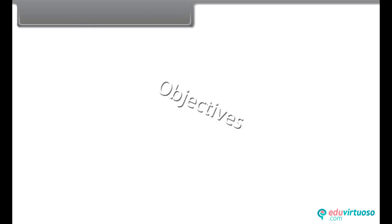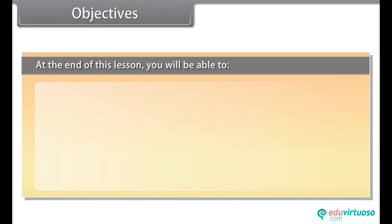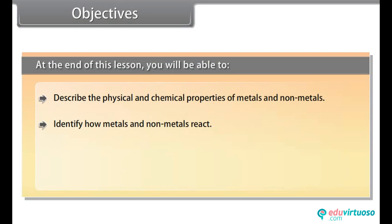Objectives. At the end of this lesson you will be able to describe the physical and chemical properties of metals and non-metals, identify how metals and non-metals react, explain the occurrence of metals, and describe corrosion.